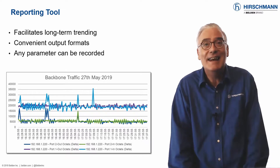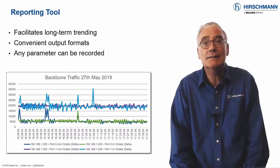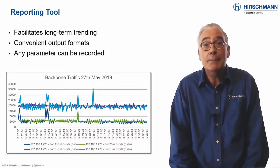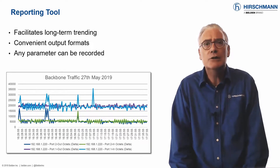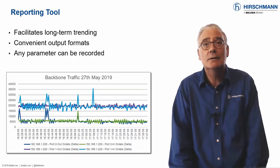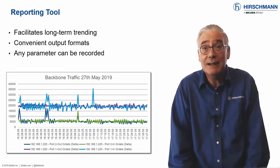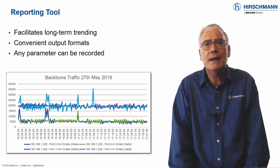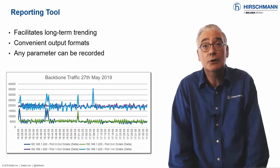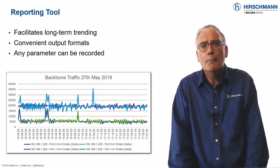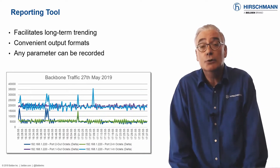Reporting is another of the less glamorous but essential tasks of network management. Keeping good records is part of a network administrator's responsibility. Long-term knowledge of your network performance will help you to spot trends and anomalies. Industrial HiVision allows any visible parameter to be added to a report, including any parameters you've defined yourself. This gives you complete flexibility in terms of the information you collect. There are many options for the scheduling of report generation, from fixed periods to sequential.